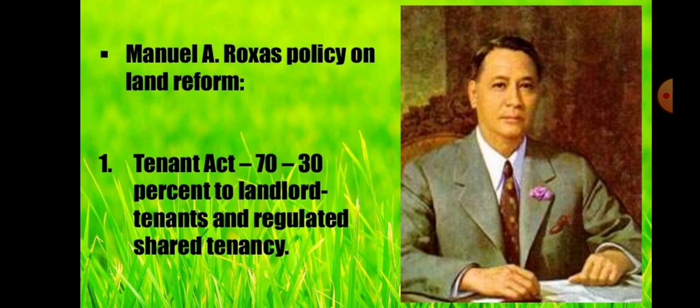Under Manuel A. Roxas on land reform, the policies included: first, the Tenant Act with a 70-30% split favoring landlords over tenants, and Regulated Shared Tenancy. It seems the percentage given to landlords was even larger than what was given to the struggling farmers.